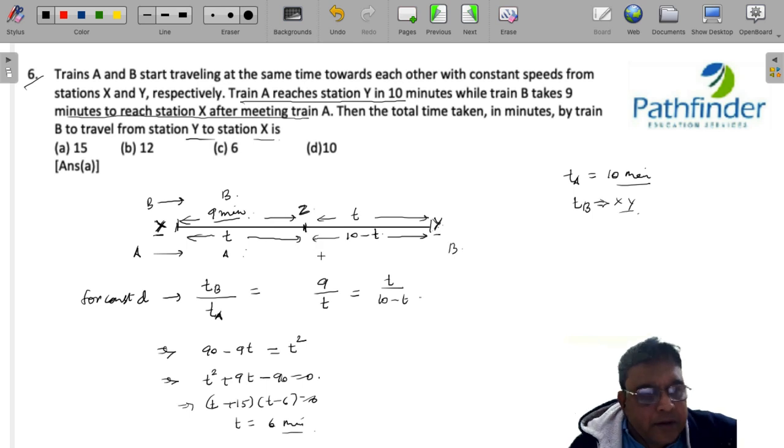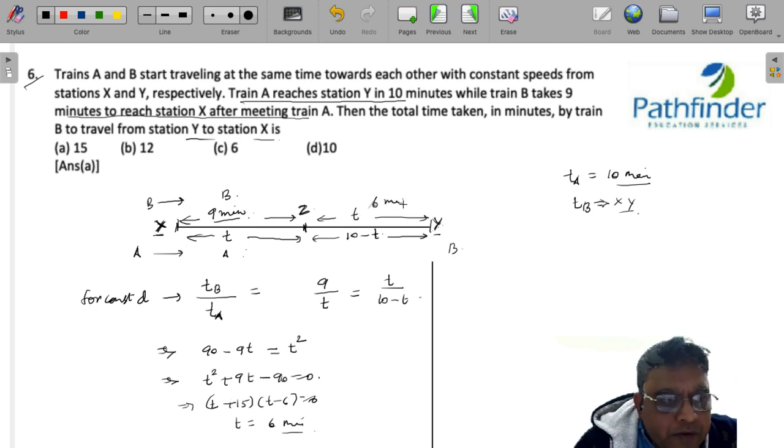What does it mean? That the time taken by both to reach the meeting point from their respective start points is 6 minutes. This is 6 minutes. For A, this is 6 minutes and this must be 4 minutes.